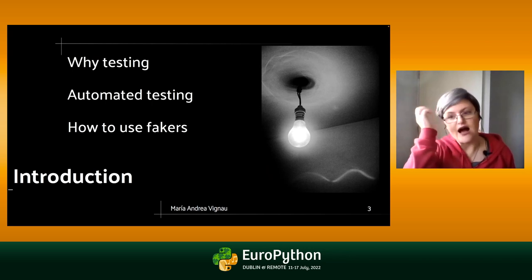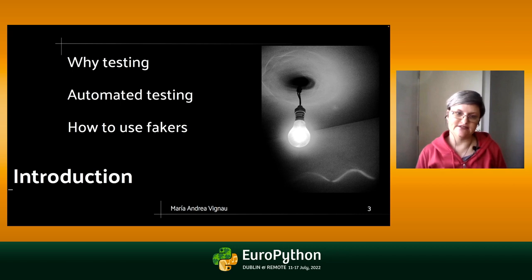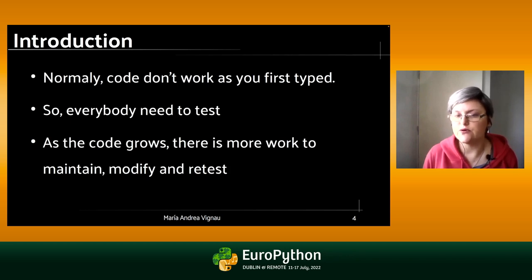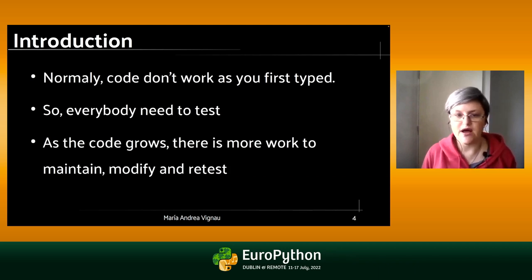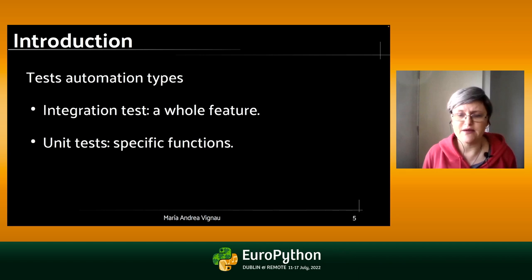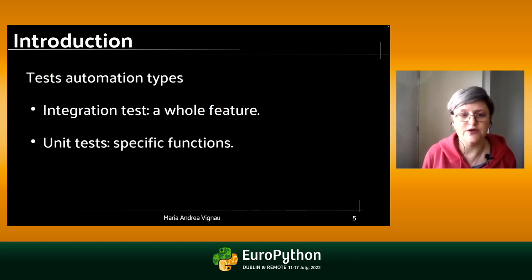Why testing? Why use automatic tests and how to use fakers? Normally when you start programming, code doesn't work when you type it because you need to test it, even manually. But when you see your system grow and the complexity grows, you need to do this automatically because you need to ensure that every part of your code is tested. There are two basic types of testing: integration tests that try to test a whole feature in your system, and unit tests that try to test specific functions.